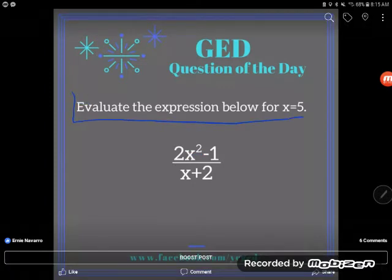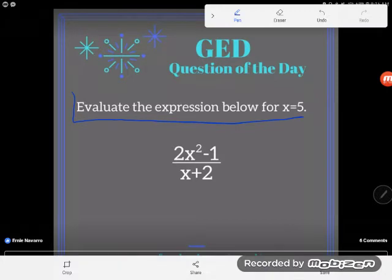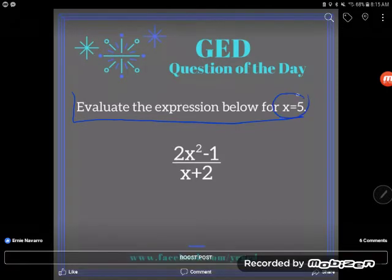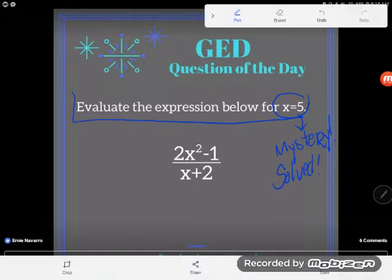Evaluate the expression below for x equals 5. And so what we have here, if they tell us x equals 5, our mystery has been solved. The variable x usually is a mystery, something we don't know about. And so if it's a mystery, we have to leave it as a letter. But our mystery has been solved. We know what this letter x stands for - it stands for 5.